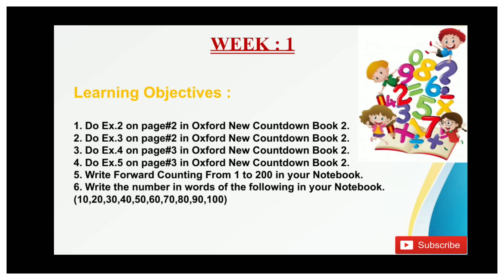This is your weekly syllabus. So in Week 1 the following learning objectives will be covered: Do exercise 2 on page 2 in Oxford New Countdown Book 2, Do exercise 3 on page 2, Do exercise 4 on page 3, Do exercise 5 on page 3, Write forward counting from 1 to 200 in your notebook, and write the number in words of the following in your notebook: